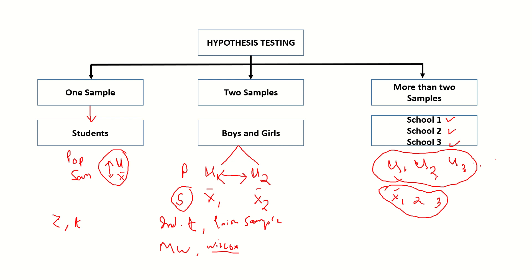For more than two samples, depending on the research design and type of data collected, I will elaborate on this in a session on parametric and non-parametric tests. When there are more than two samples, we can go for ANOVA, repeated measures ANOVA, Kruskal-Wallis test, or Friedman ANOVA. These are the different kinds of tests available.